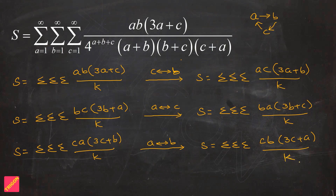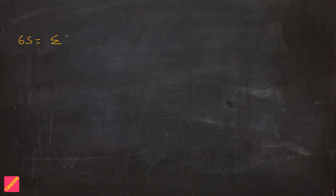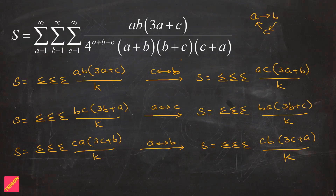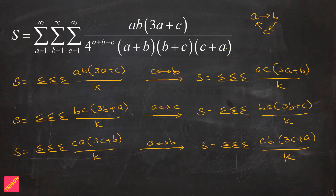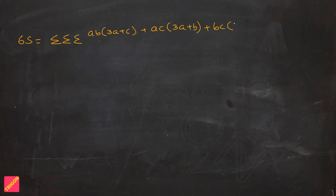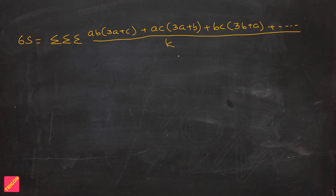So we now have six different ways of writing the same S. We add all six to get 6S equal to the triple summation where all terms share the same denominator k, and the numerator contains: ab·(3a+c), plus ac·(3a+b), plus bc·(3b+a), and the remaining three analogous terms — six terms in total in the numerator.